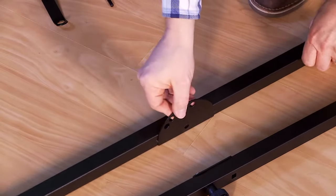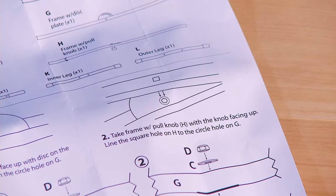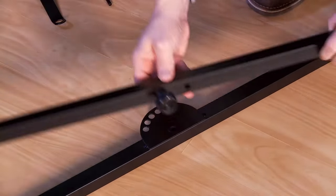Locate the frame with the disc and lay it flat. Next, take the frame with the pull knob and line up the square hole with the round hole on the frame with the disc.